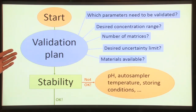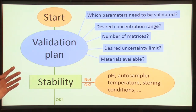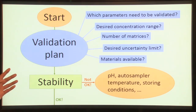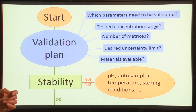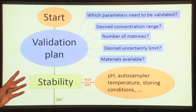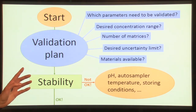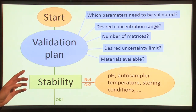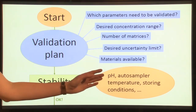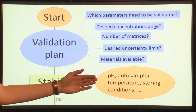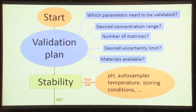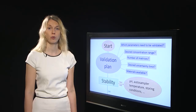If you have conducted the validation plan you can start the actual validation. We suggest starting the validation with estimating the stability of your analyte, because the instability of the analyte will influence other validation parameters. If stability is not acceptable you should try to make modifications to your method, for example adjust the pH of the solutions, reduce the autosampler temperature, or change the storing conditions of your samples.